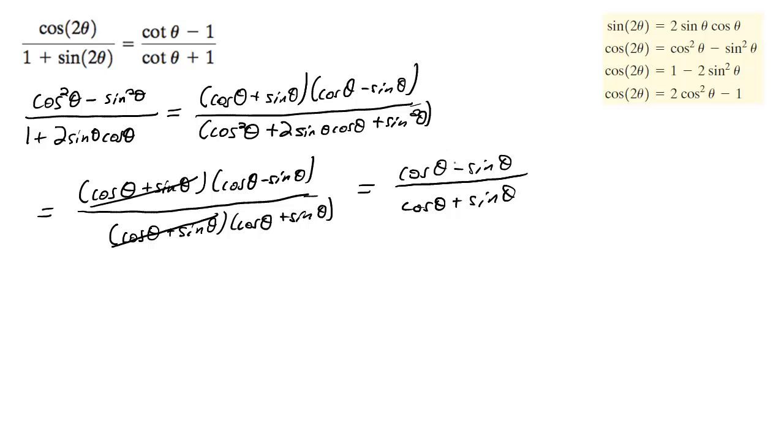Looking at these and looking at what we have here on the left side, we're probably going to multiply by 1 over sine theta. So we're going to get cosine theta over sine theta minus sine theta over sine theta all over cosine theta over sine theta plus sine theta over sine theta.